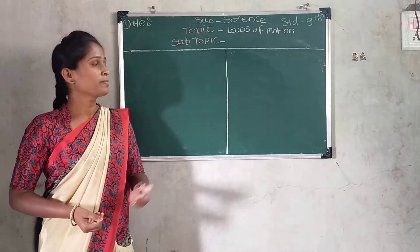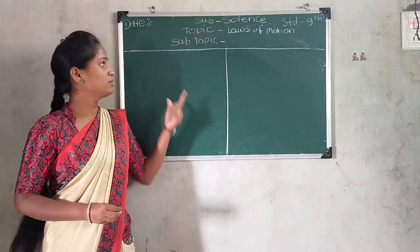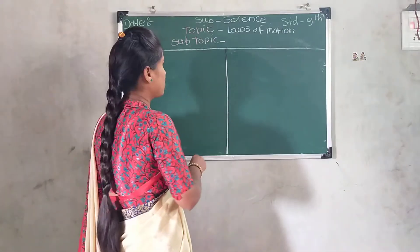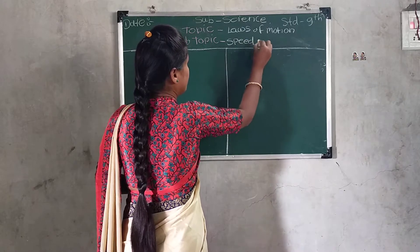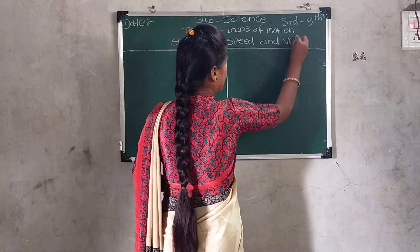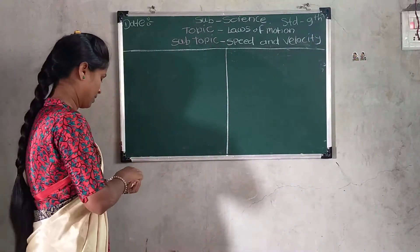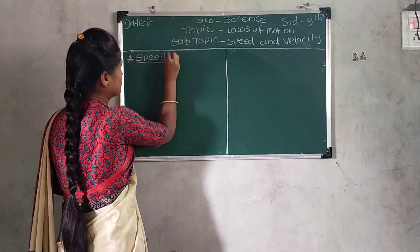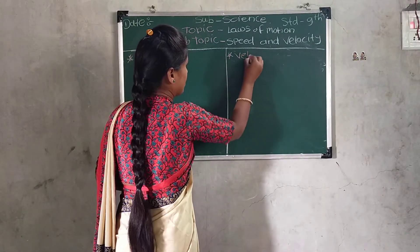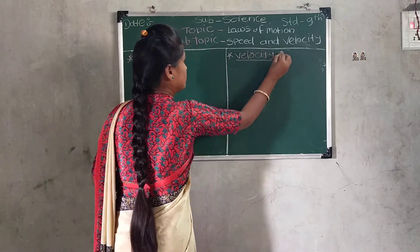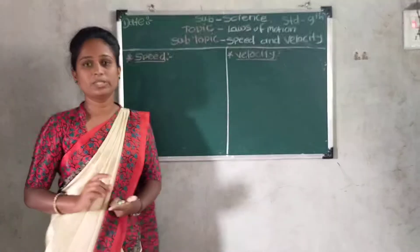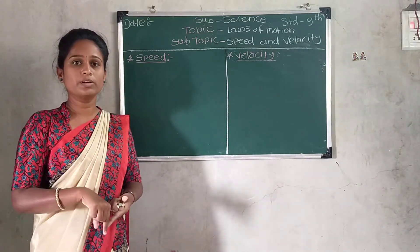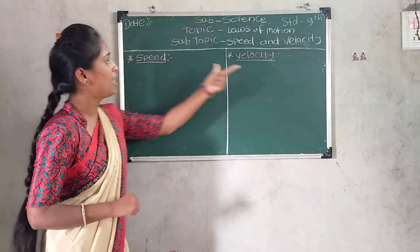So today, in the chapter on laws of motion, the topic is speed and velocity. Speed and velocity — how are they different from distance and displacement? Speed and velocity also depend on motion.